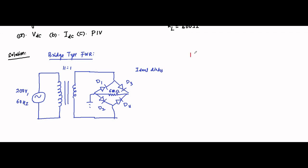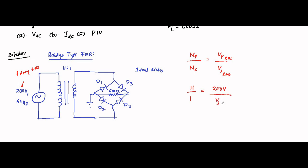First, we use the turns ratio. We know that NP by NS is related to the primary and secondary winding voltages, and the same applies for RMS values. So NP by NS, that is 11 by 1, is equal to 200 volts RMS (primary) divided by the secondary winding RMS voltage. This implies the secondary winding RMS voltage equals 200 divided by 11, which comes to approximately 18.18 volts.